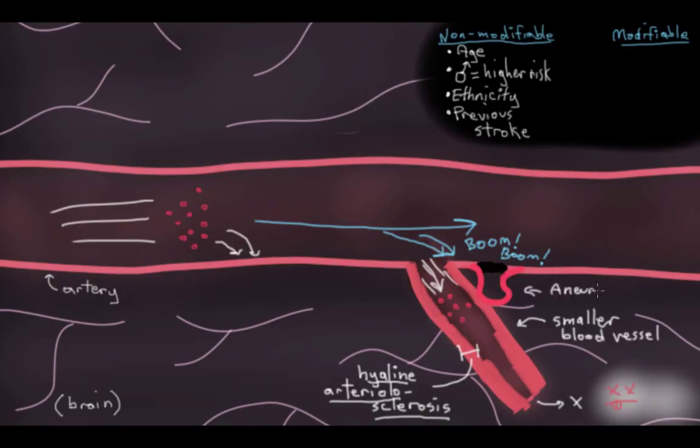So here's our aneurysm. And the problem with aneurysms is that as they're a weakening of a vessel wall, they have this tendency to rupture and spill blood out of the circulation. So hypertension can cause aneurysms, which can then cause hemorrhagic strokes.